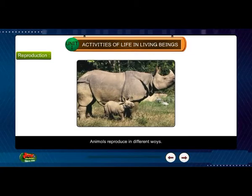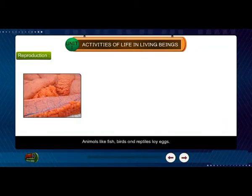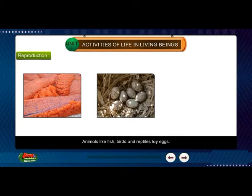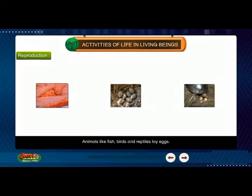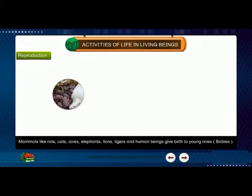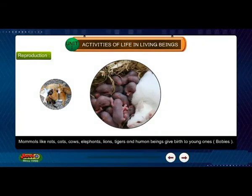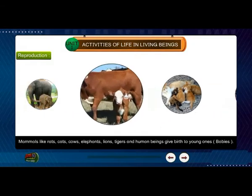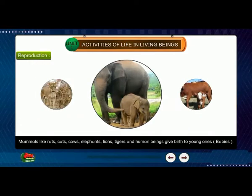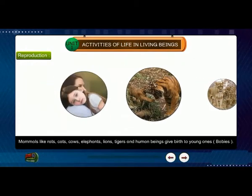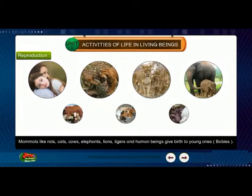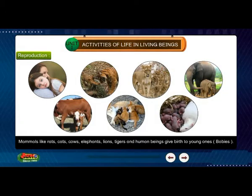Animals reproduce in different ways. Animals like fish, birds and reptiles lay eggs. Mammals like rats, cats, cows, elephants, lions, tigers and human beings give birth to young ones — babies.